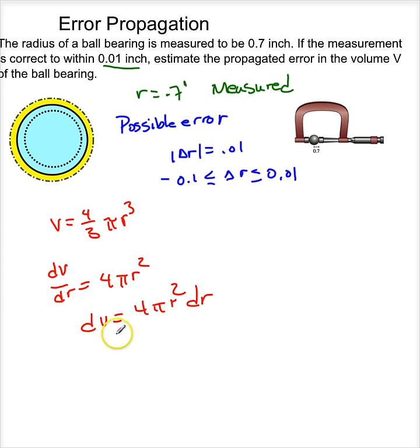So I have a differential volume here. I'm going to make the approximation that delta V is approximately equal to dV. So what does this equal? This equals 4 pi r squared dr.